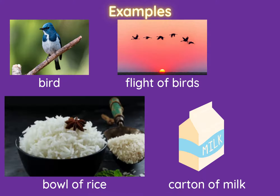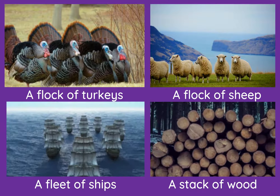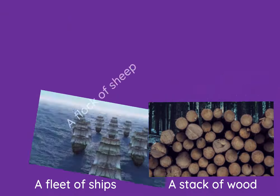The examples are: if I see a bird, I say I see one bird; if I see more birds, I should say I see a flight of birds. Similarly, I ate a bowl of rice. I want a carton of milk. I saw a flock of turkeys. I saw a flock of sheep. I see a fleet of ships. I want a stack of wood.